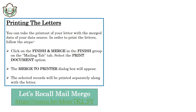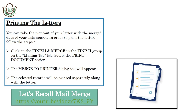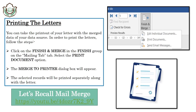Students, you can take printouts of your letter with the merged data of your data source. In order to print the letters, follow these steps: click on Finish and Merge in the Finish group on the Mailings tab, then select the Print Document option. The Merge to Printer dialog box will appear, and the selected records will be printed separately along with the letters.